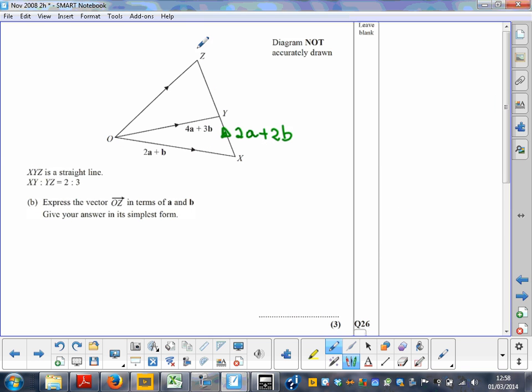It says that XYZ is a straight line, and XY is two parts and YZ is three parts. So basically if I put this in context, this is two parts while this would be three parts, so in total it would be five parts, which basically makes XZ in this direction 5a plus 5b.